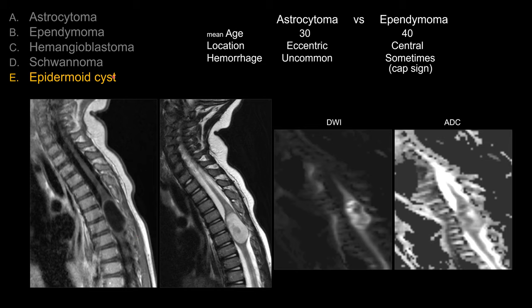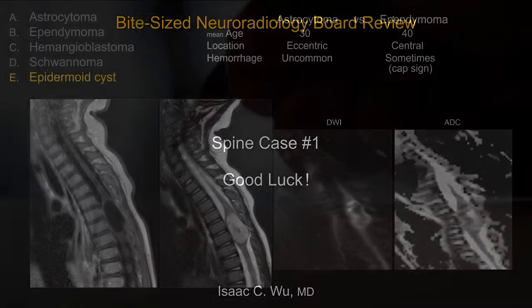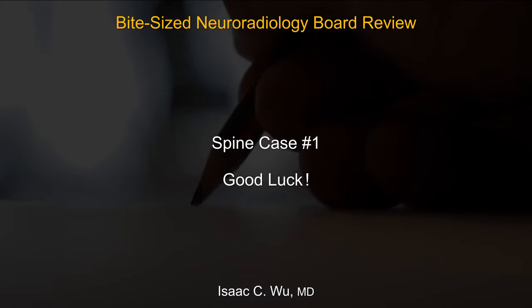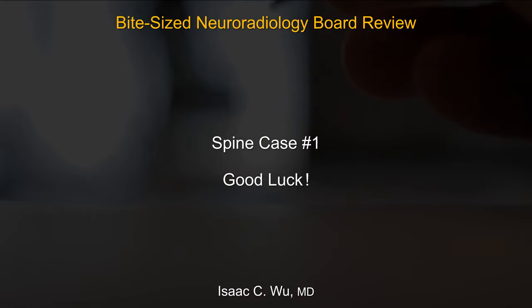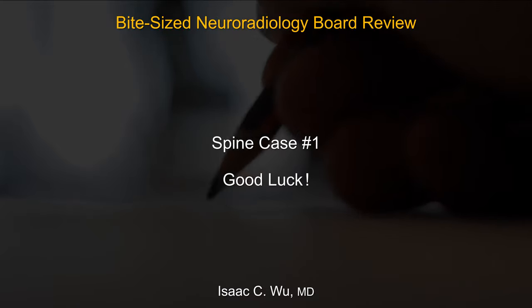For schwannoma, or a cystic schwannoma, it should be extramedullary and intradural. In this case it is clearly not an extramedullary lesion, so schwannoma is ruled out. The best answer here is epidermoid cyst. If you have any questions, please contact me — good luck with your studies.